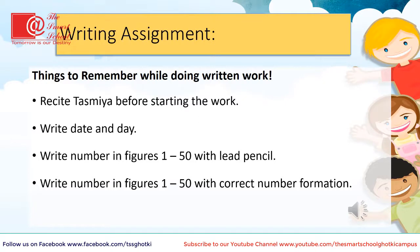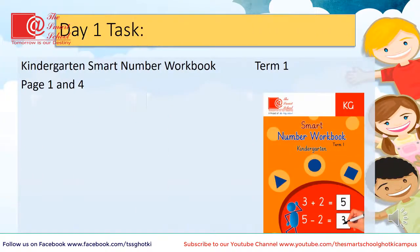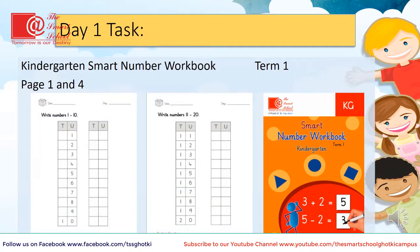Let's do some written work. But wait — first we have to learn the steps we have to follow for our writing assignments. Recite Tasmiya before starting the work. Write date and day. Write numbers in figures 1 till 50 with lead pencil and with correct number formation. Open your smart number workbook. Today we will do page number 1 and 4. Read the numbers 1 till 10 and write numbers 1 till 9 in the unit column, and number 10 in the tens and units columns. Now read the numbers 11 till 20 and write them with correct number formation and place value.